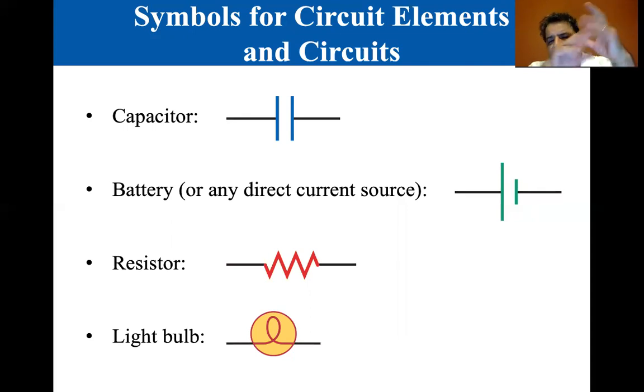We're also going to have a resistor, which is this zigzag line. In fact, Tuesday we should be doing an experiment with a capacitor and a resistor—kind of jumps the gun, but we have to do some lab. Then there's a little symbol for a light bulb, which is basically a resistor.